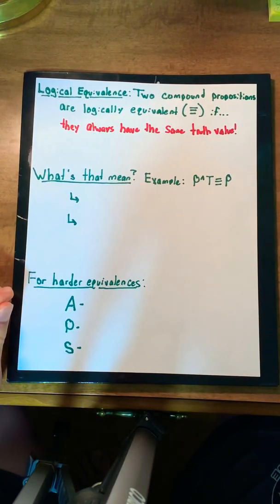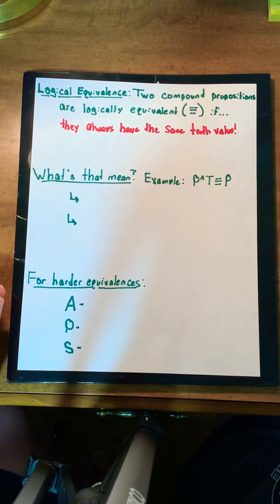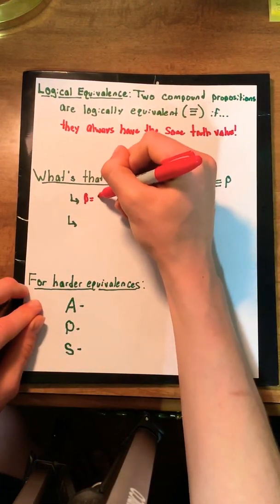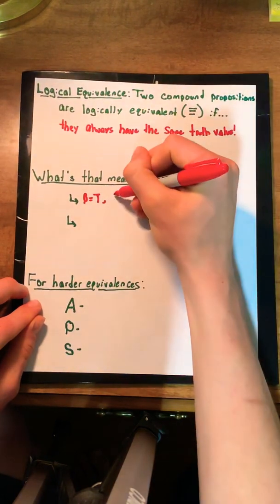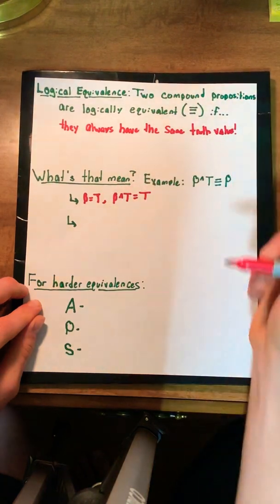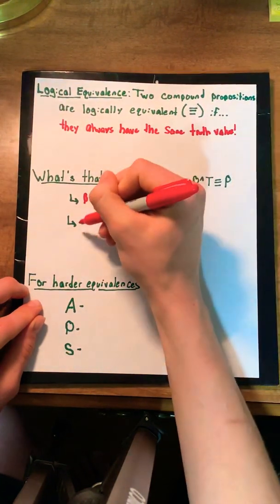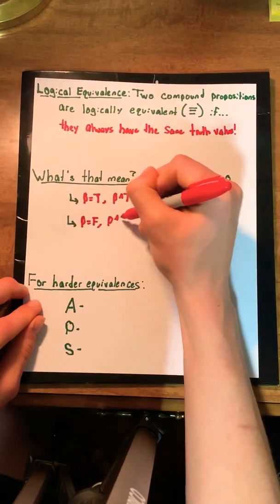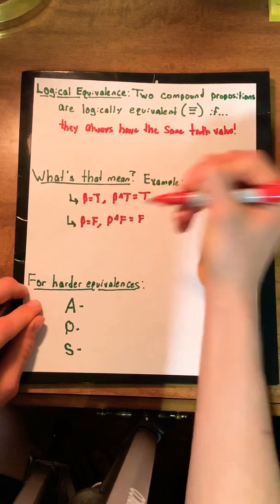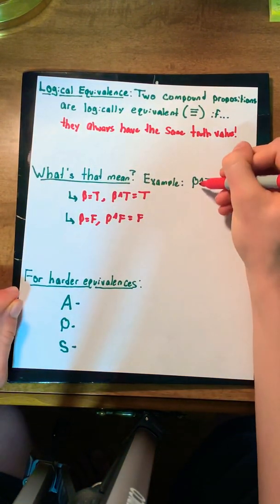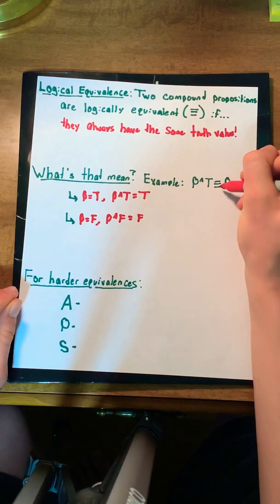So what exactly does that mean? Let's take the example P and true is logically equivalent to P. Suppose we set P equal to true. That means P and true equals true, or P. And suppose we set P equal to false. That means P and false equals false, or P. So no matter what we set P equal to, P and true is always logically equivalent to P.